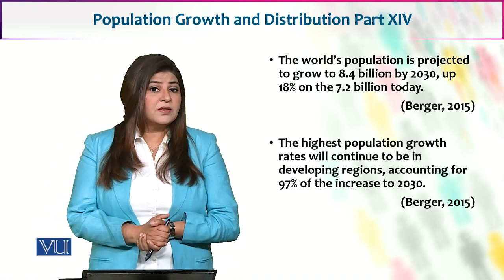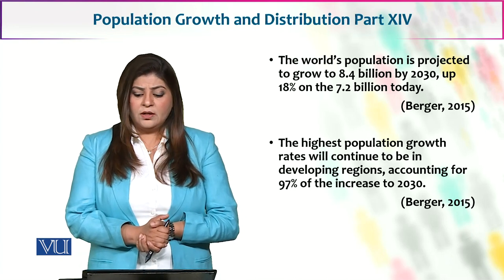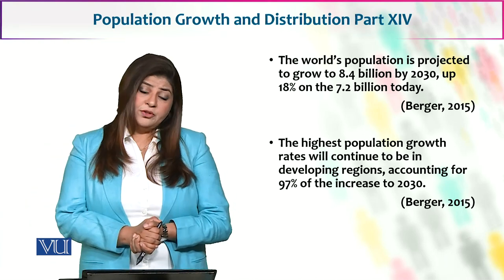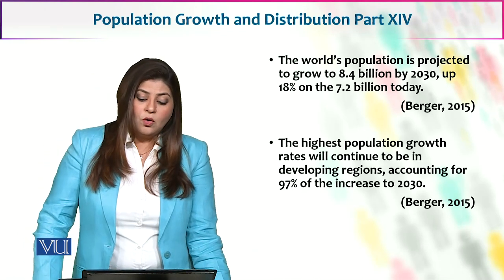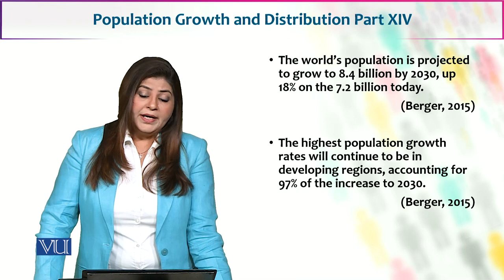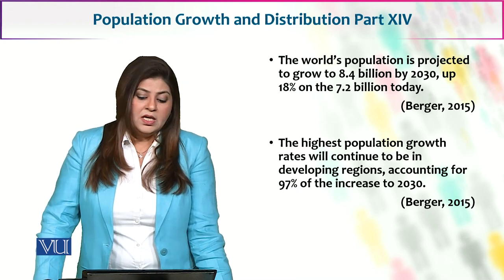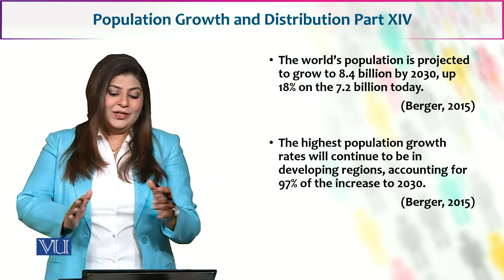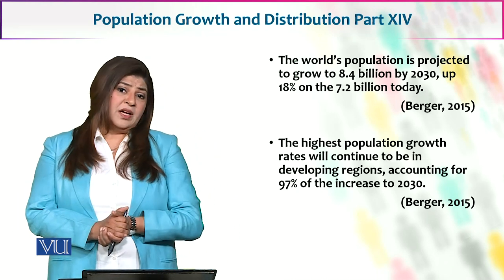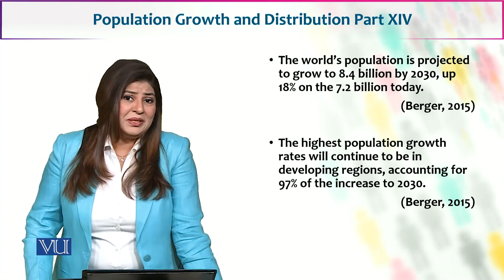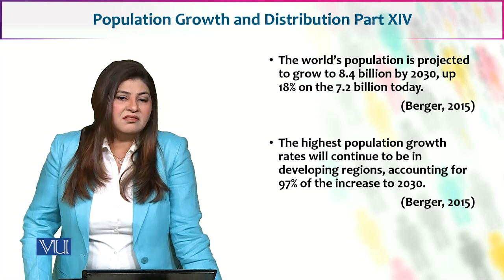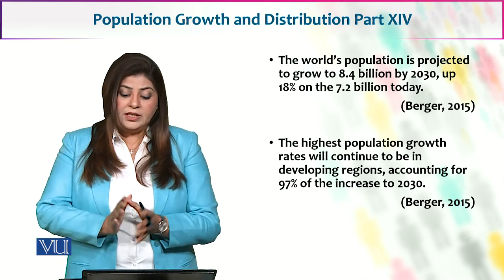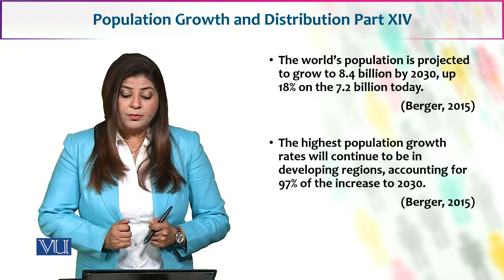Yeh saari cheezein hain — agar hum population dynamics ki baat karein to population growth rate ko jaanne se hum projections aur predictions kar sakte hain. Aaj ke growth rate ko dekhte hue, the world population is projected to grow to 8.4 billion by 2030 — sirf aane wale 8 se 10 saalon mein. Ek billion mein aam zabaan mein samjhayein to 100 crore hote hain. Yeh 18% zyada hogi because aaj approximately 7.2 billion hain.